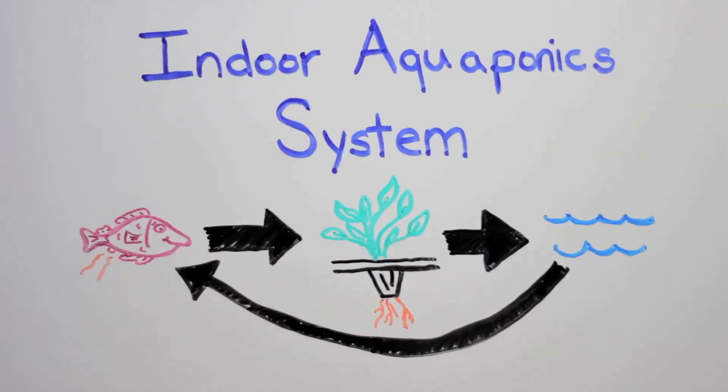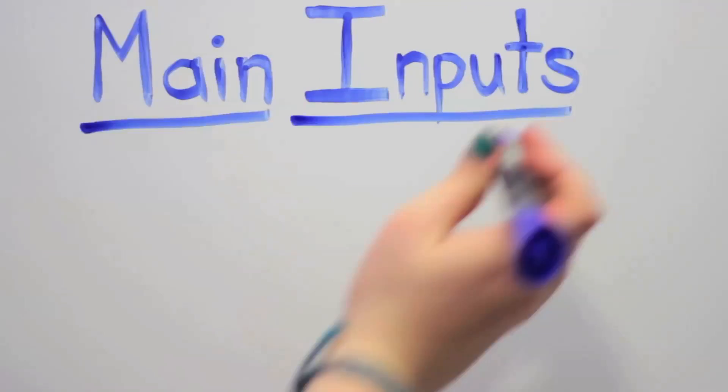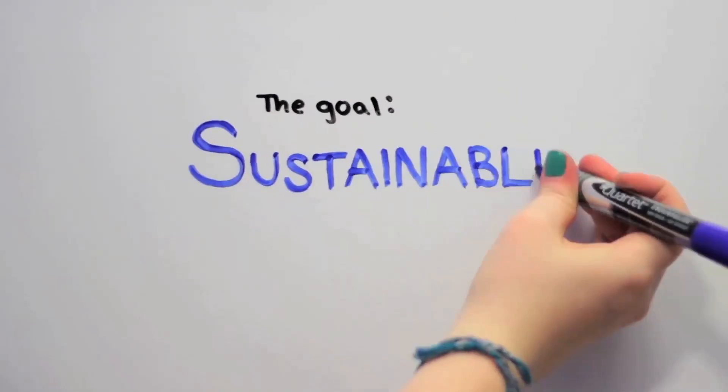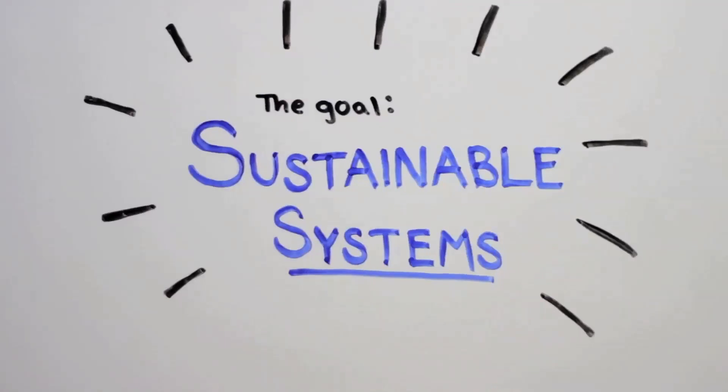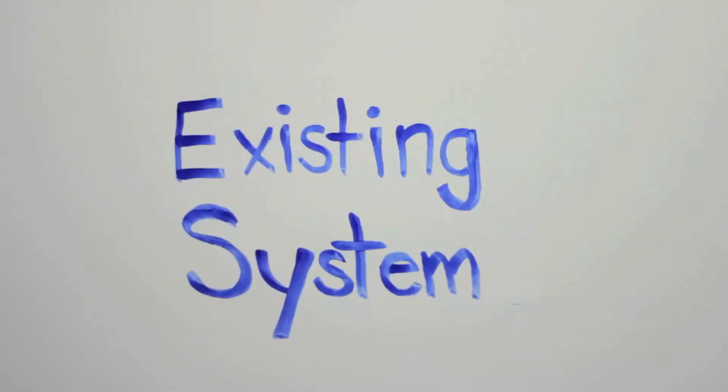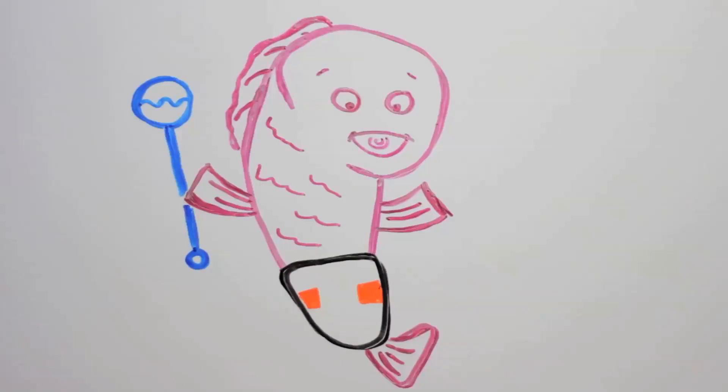In fact, our aquaponic system has only two main inputs: fish food and baby fish. But Food Chain is committed to demonstrating the most sustainable systems, which means we want to waste as little as possible. So even though our existing system used only a few resources, we knew we could do better, so we focused in on baby fish.